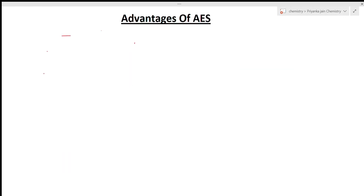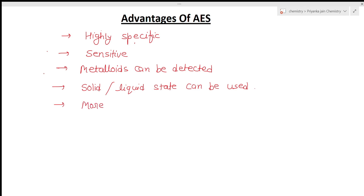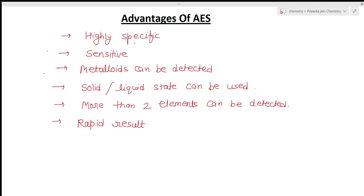This technique has several advantages. It is highly specific and sensitive, with advantages over atomic absorption spectroscopy. Metalloids can also be detected, which cannot be done with AAS. The sample can be used in solid or liquid form. It can be used for more than two elements simultaneously, and we get rapid results. This is the complete overview of atomic emission spectroscopy. In the next video we will see different types of questions from analytical chemistry. Please share, subscribe, and comment. Thank you.